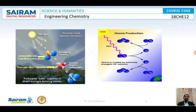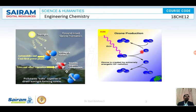Inhaling ozone causes lung cancer, it damages brain cells, and finally it will lead to death. Now, how is ozone produced in the atmosphere? Atmospheric oxygen, in the presence of sunlight, splits into two nascent oxygen atoms. This nascent oxygen combines with atmospheric oxygen to produce ozone. So atmospheric oxygen in the presence of sunlight splits to two nascent oxygen atoms, and this nascent oxygen combines with atmospheric oxygen to get ozone. This is how ozone is formed.